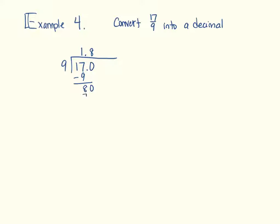So, 8 times 9 is 72. When you subtract, you get 8. Put the 0 up there, bring it down. Now you have 9 into 80, once again, that's going to be 8. So, can you figure out what your repeating digit is going to be now? If you guessed 8, that's correct. So, 17 ninths is actually 1.8 repeat.